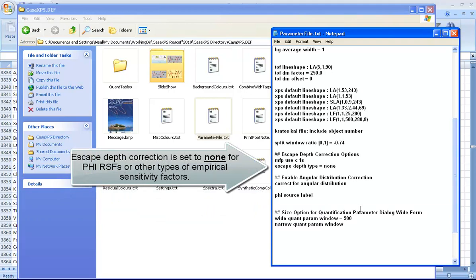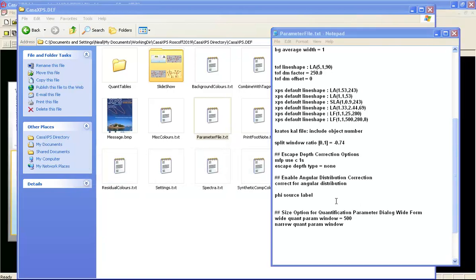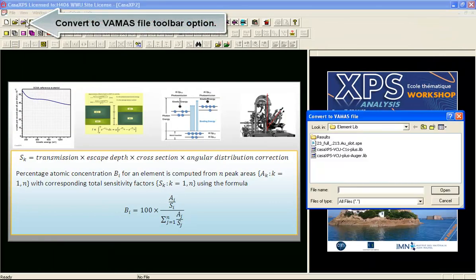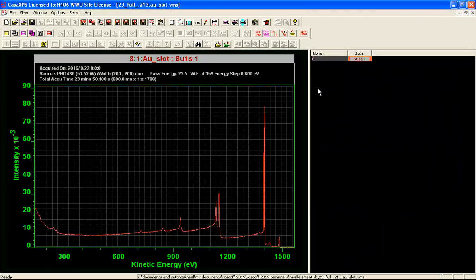When a file is converted, the VAMAS block will contain a source label that says PHI 1486 to match the element library. With a PHI source label in the configuration file, at the point that a file is created, you use the convert to VAMAS file dialog window. Selecting an SPE multipack file and pressing the open button converts the data within that file.